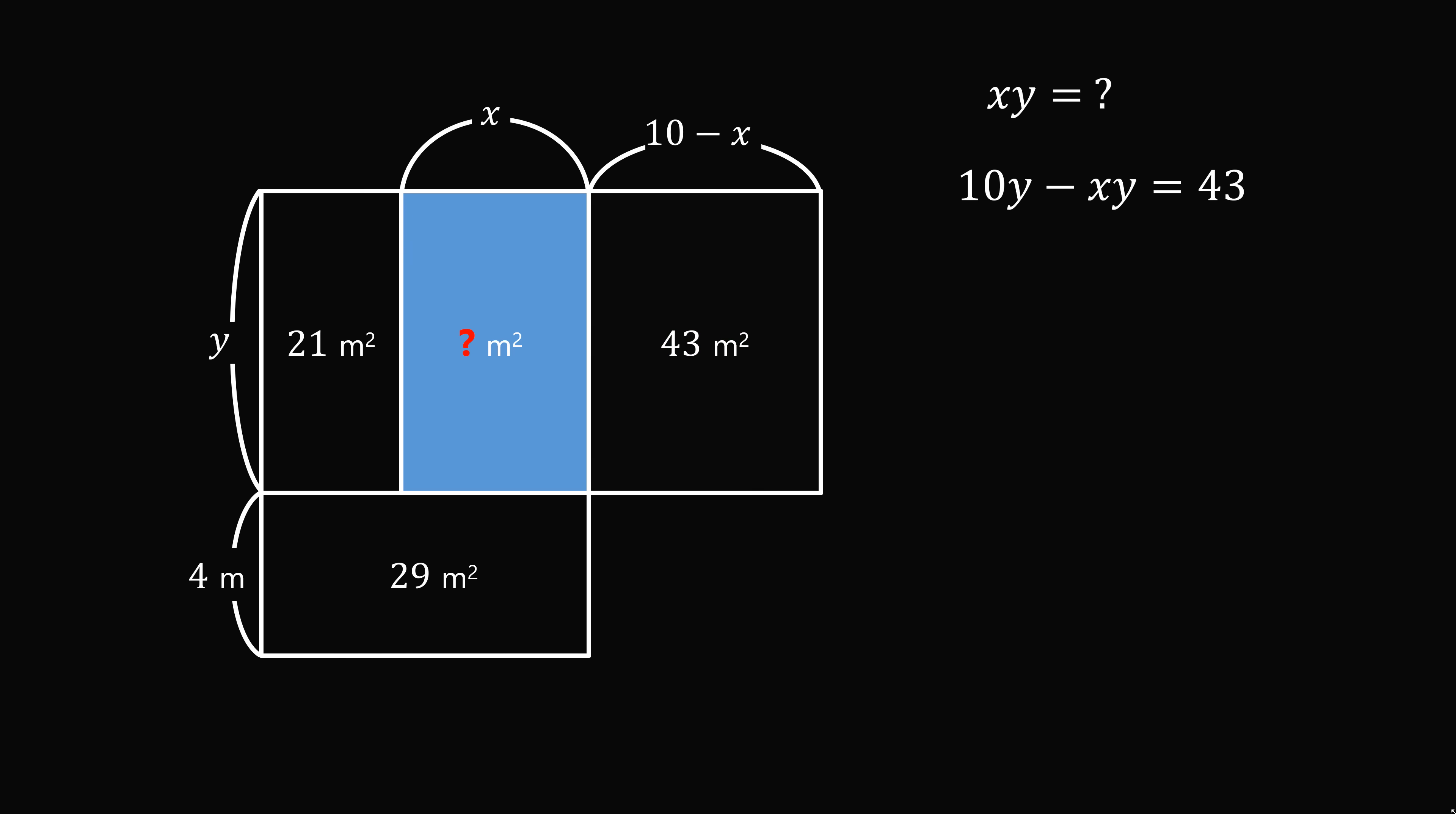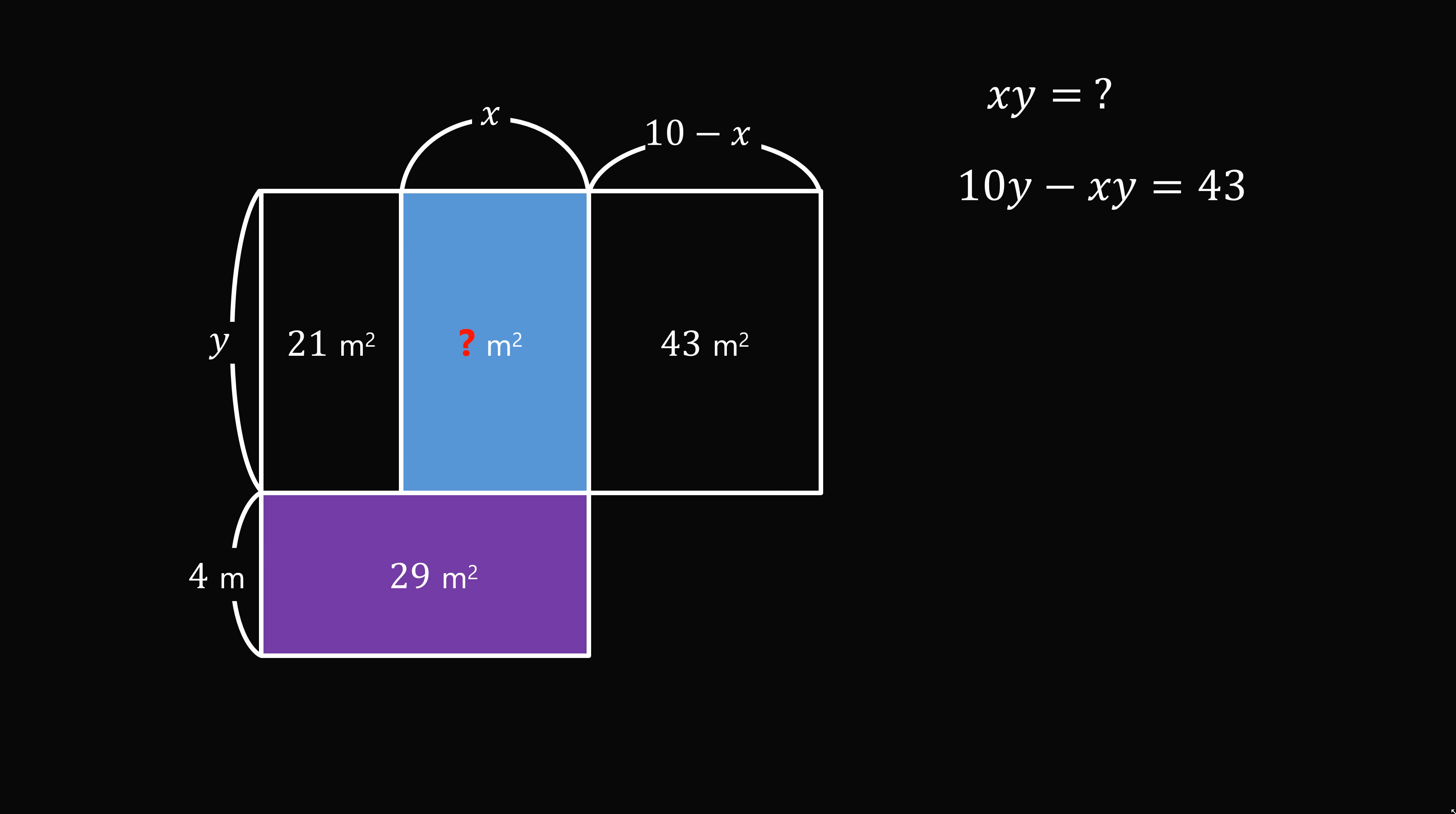Now let's focus on this rectangle with area equal to 29 meters squared. We know that its height is equal to 4, so its width will be equal to 29 over 4, which is equal to 7.25 meters. Now this spans the width of the first two rectangles, so the first rectangle has width that's equal to 7.25 minus x.